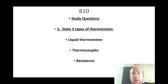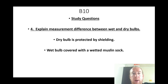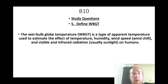State three types of thermometer: liquid thermometer, thermocouples, and resistance thermometers. Explain the measurement difference between wet and dry bulbs: dry bulb is protected by shielding; wet bulb is covered by a wetted muslin sock. Define WBGT (wet bulb globe temperature): a type of apparent temperature used to estimate the effect of temperature, humidity, wind speed, wind chill, and visible and infrared radiation on humans.